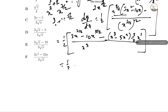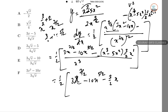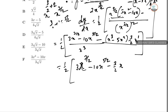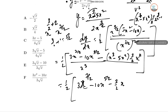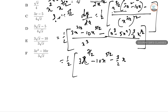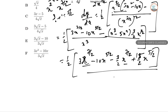Expanding again: 3X to the power 7/2, minus 10X to the power 5/2, minus 3/2 times X cubed times X to the power 1/2. Note that 3/2 minus 1 is 1/2, so the last power is correct. Then plus 3/2 times 5X squared times X to the power 1/2, giving plus 15/2 times X to the power 5/2. That is the full numerator, divided by X cubed.